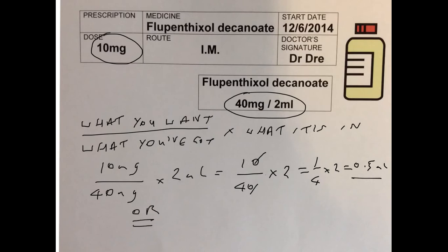Or we could multiply the top line: 10 times 2 is 20, over 40, which is the same as a half, which is 0.5ml. Which method do you prefer?